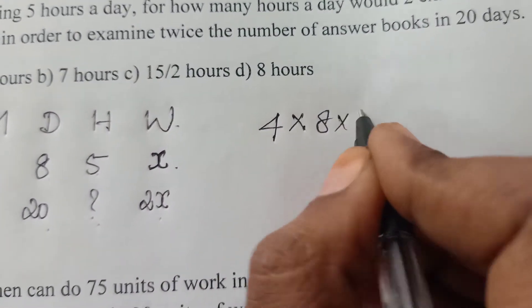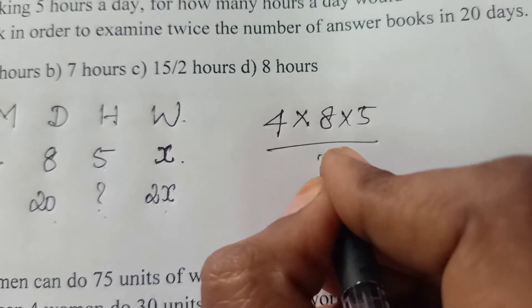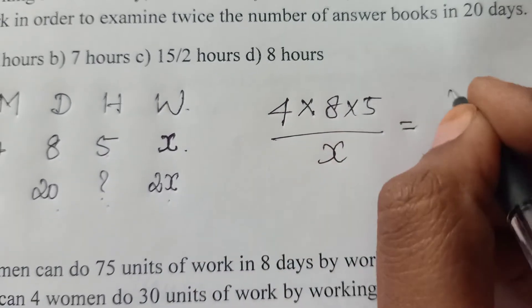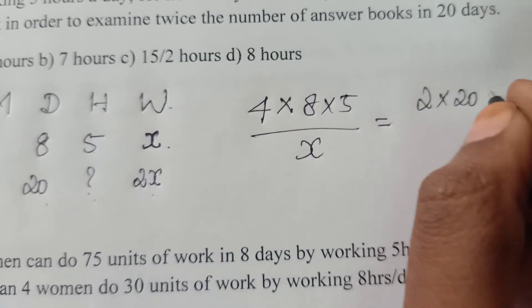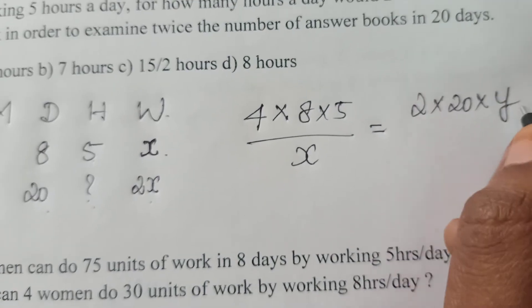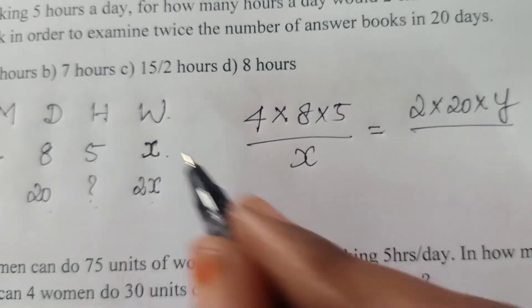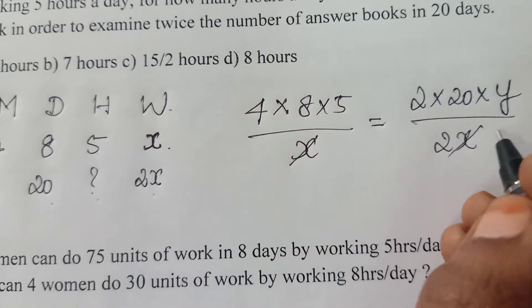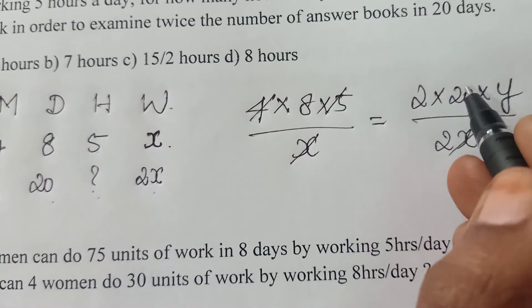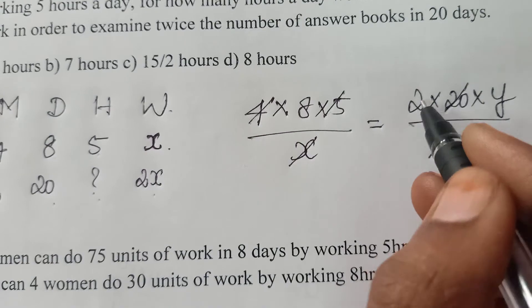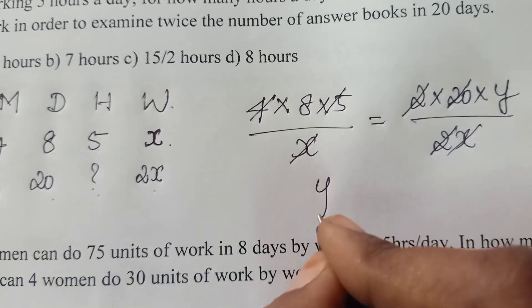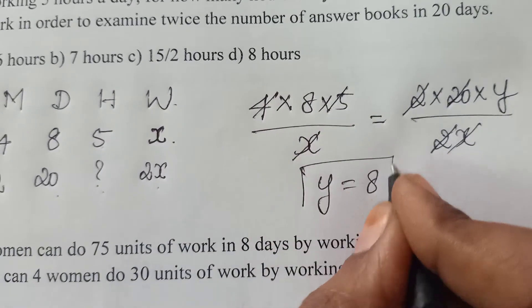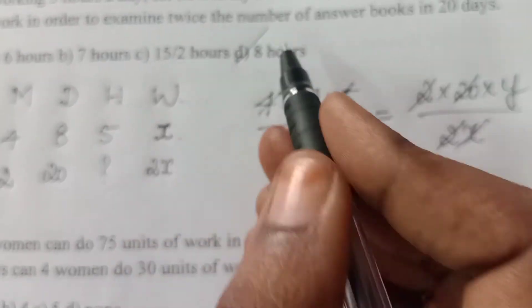M1 D1 H1 by W1 equal to M2 D2 H2. Let us keep it as Y because I cancelled x already. So this will be 2x. This x and x will get cancelled. 4 times 5 is 20, will get cancelled. This 2 and this 2 will get cancelled. So the value of y will be 8. In this question, the answer is 8 hours.